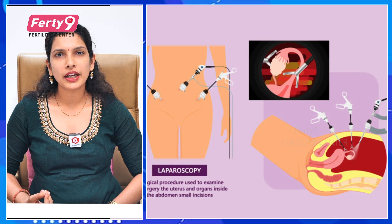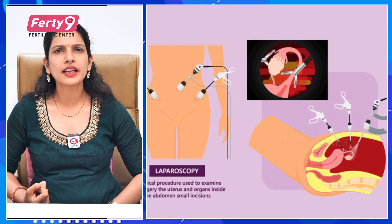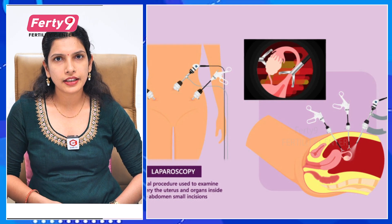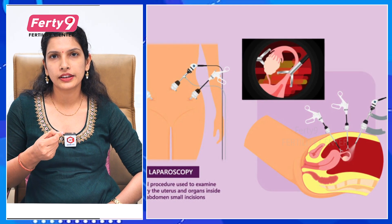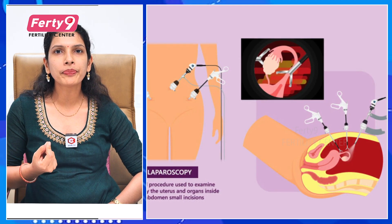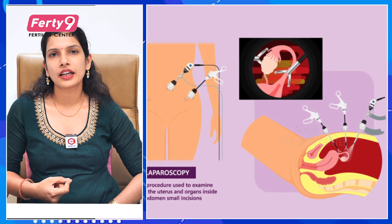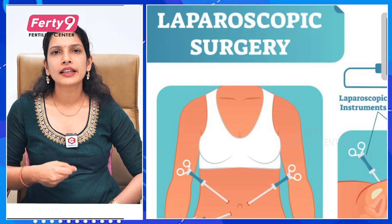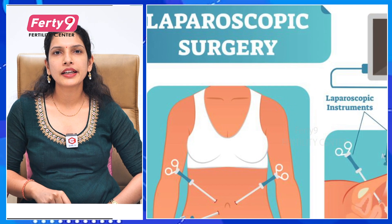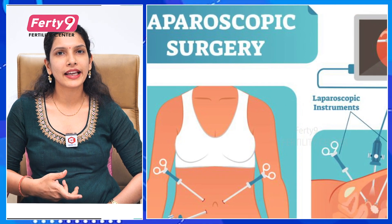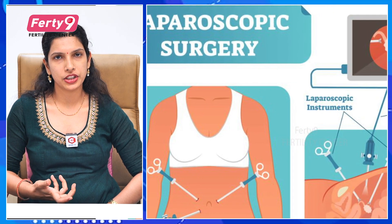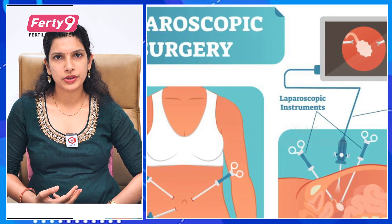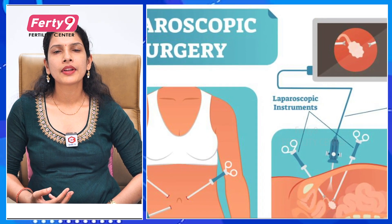In laparoscopy, we make a small incision of about 1cm on the abdomen. We then insert a camera through this incision to visualize inside the body.